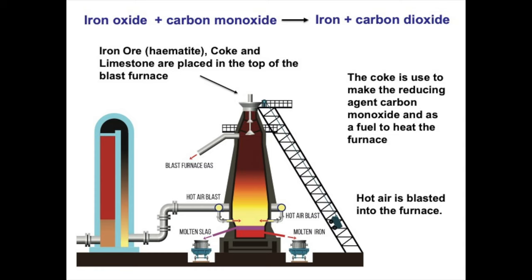In the blast furnace, the coke burns in a combustion reaction producing carbon dioxide, which then reacts with more carbon to form carbon monoxide. The carbon monoxide reacts with the iron oxide from the iron ore to produce iron and carbon dioxide. This is a continuous process — it operates 24 hours a day and the furnace is not cooled down; it's kept at 1500 degrees C. The coke acts as a fuel producing lots of heat, and we end up with liquid molten iron and a material called slag.